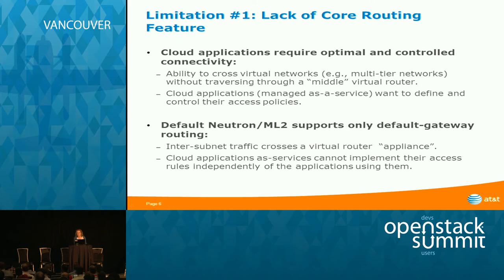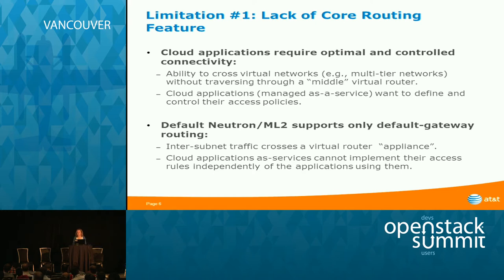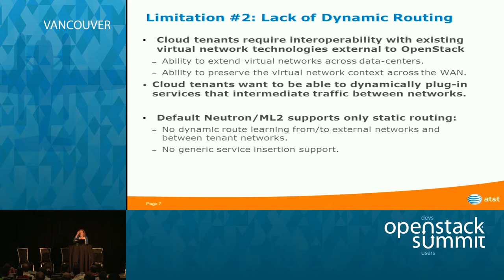Another limitation associated with lack of core routing is that today cloud applications are deployed and managed as a service. Service owners would like to define and control their access policies. This is not possible today with default Neutron router because you can define policy only from the exit of the client network. The policy definition is equivalent to its implementation, which is very limited.